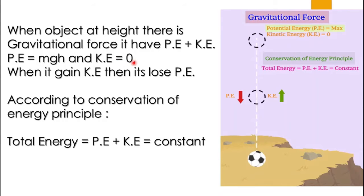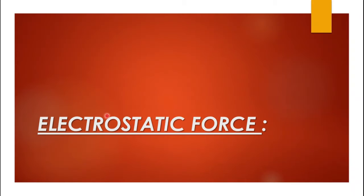When the object is at height, potential energy is maximum and kinetic energy is zero. If we release it downward, what happens? When it gains kinetic energy — as it falls, kinetic energy increases and potential energy decreases. According to the conservation law, the principle of energy states that the sum of potential energy and kinetic energy is constant. That is the conservative force.